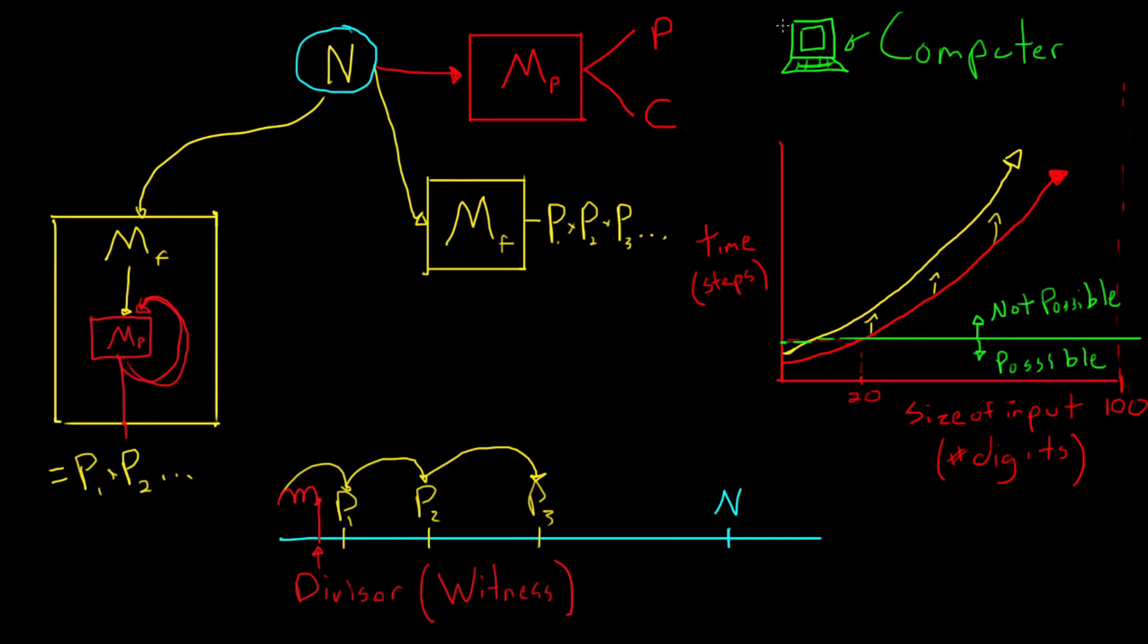However, even if we had, say, 1,000 computers running for a year, this would simply just push this horizontal line up to some other threshold. And this would allow us to run tests on larger numbers. But as you can see, we would always hit some limit where the input is large enough that we can no longer solve the problems again.